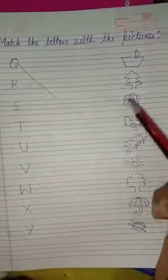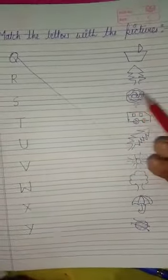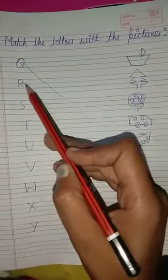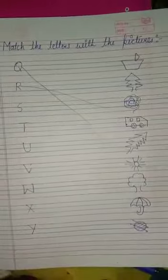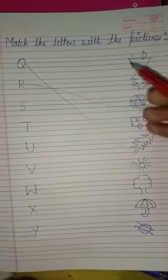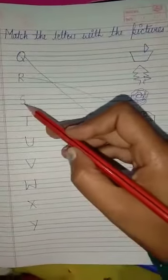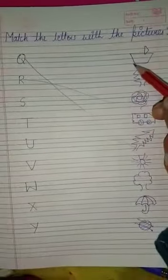This is R. R for Rose. Yes. So now match R like this. This is S. S for Ship. S for Ship.